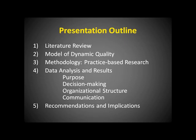Here is the outline I'll use. I'll start with a summary of the literature review, then describe a model of dynamic quality, and describe the research methodology. Then I'll talk about the data analysis and results around four themes that emerged in this process — purpose, decision-making, organizational structure, and communication. Then we'll talk about the implications and recommendations of this study.